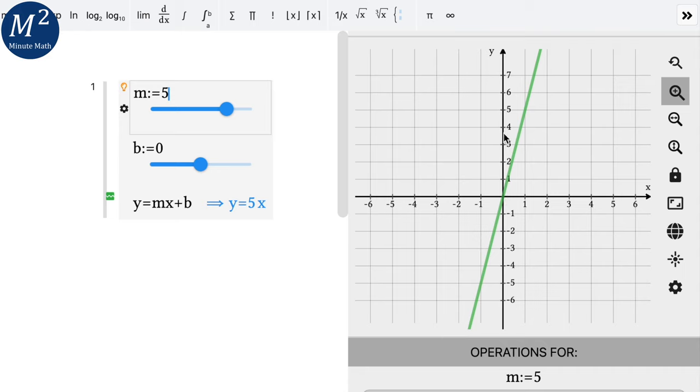Same thing with negative 5. We go down 1, 2, 3, 4, 5 over 1.